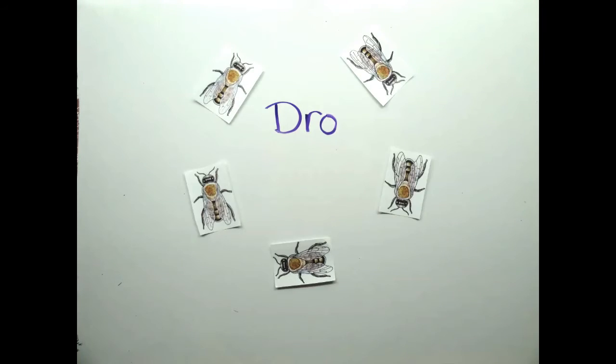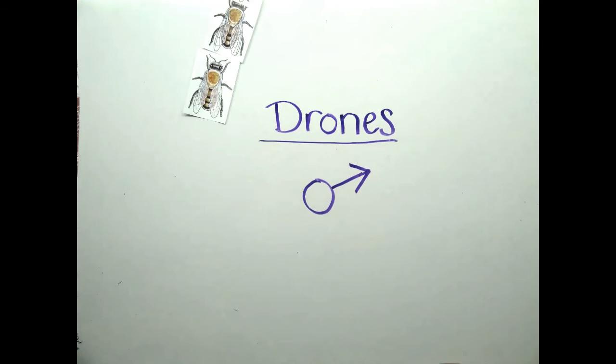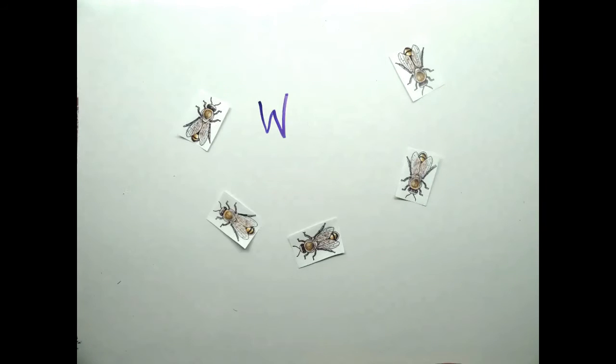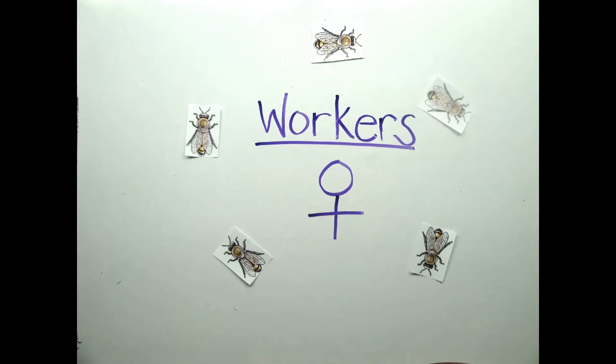Honeybees are social insects and their colonies are divided into a caste system comprised of male drones, sterile female workers, and a queen bee.